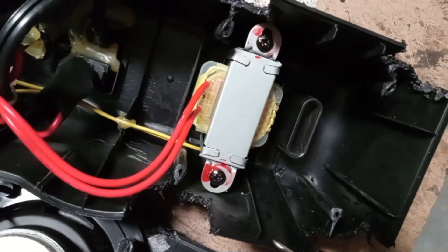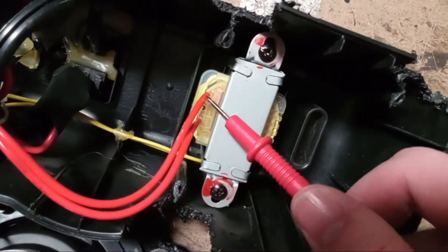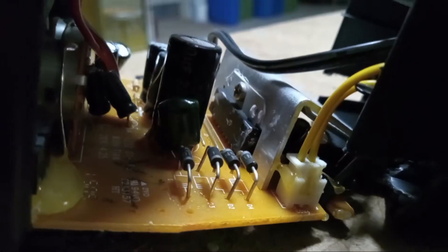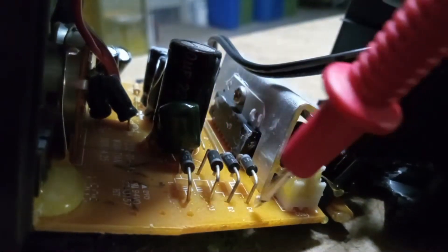The power cord feeds directly into a transformer, the output of which leads directly back to the board. Based on the initial observation, I'm willing to bet that it leads to these 4 diodes, which form a full-bridge rectifier.